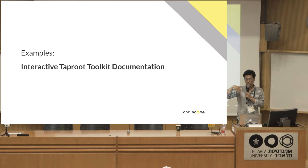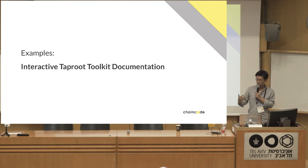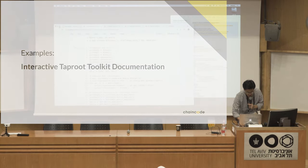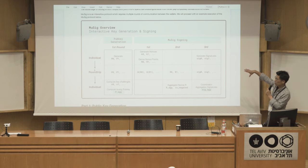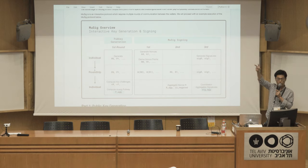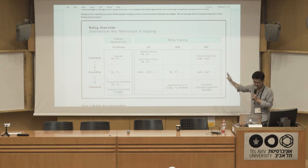I'll go through a couple of chapters to give you an overview of what this toolkit can do and what you can learn from it. The first example is MuSig, which Eli Kai alluded to. MuSig is pretty neat: we can create an N-of-N multisig that is unobservable on chain — one pubkey, one signature — however it is very interactive.